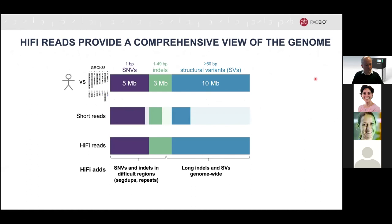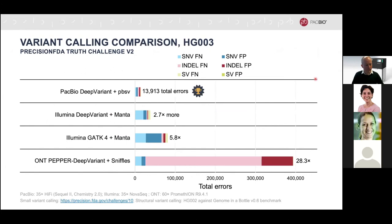I'll go through some of the other applications you can achieve with HiFi reads. You can use HiFi reads to call variants, allowing a comprehensive look at single nucleotide variations, indels, as well as structural variants. In the latest precision FDA TRUTH challenge, using DeepVariant and PacBio, you achieve the best performance of any single technology possible using PacBio HiFi technology. DeepVariant is the variant caller provided by Google.